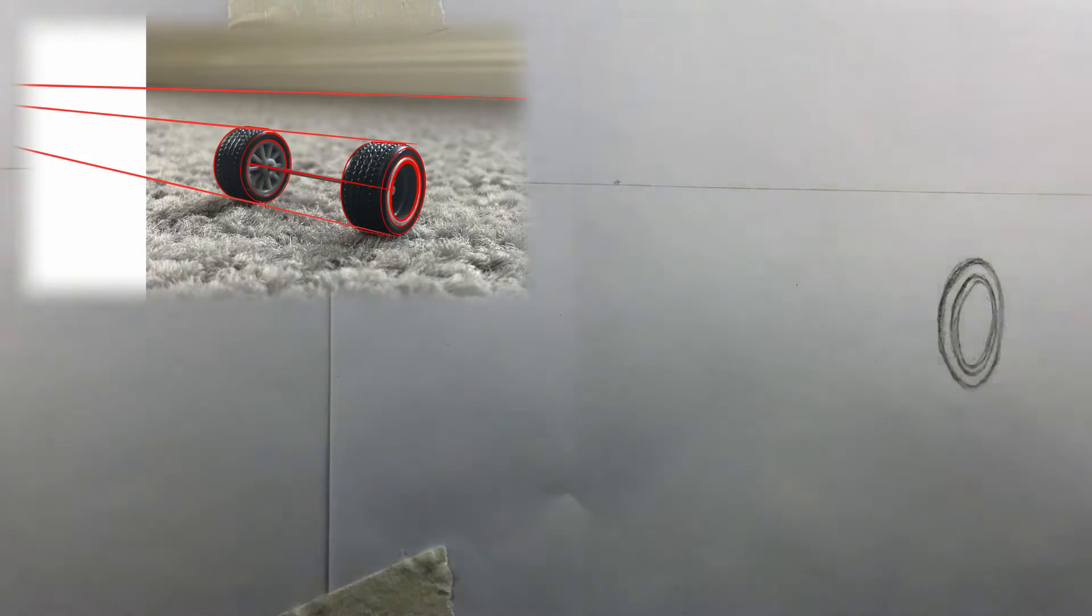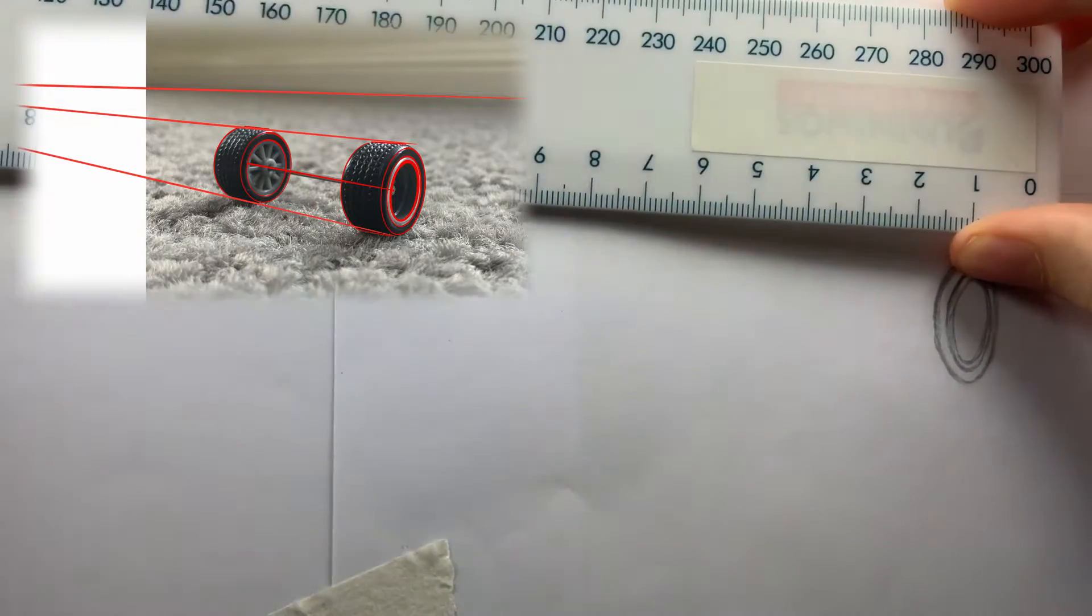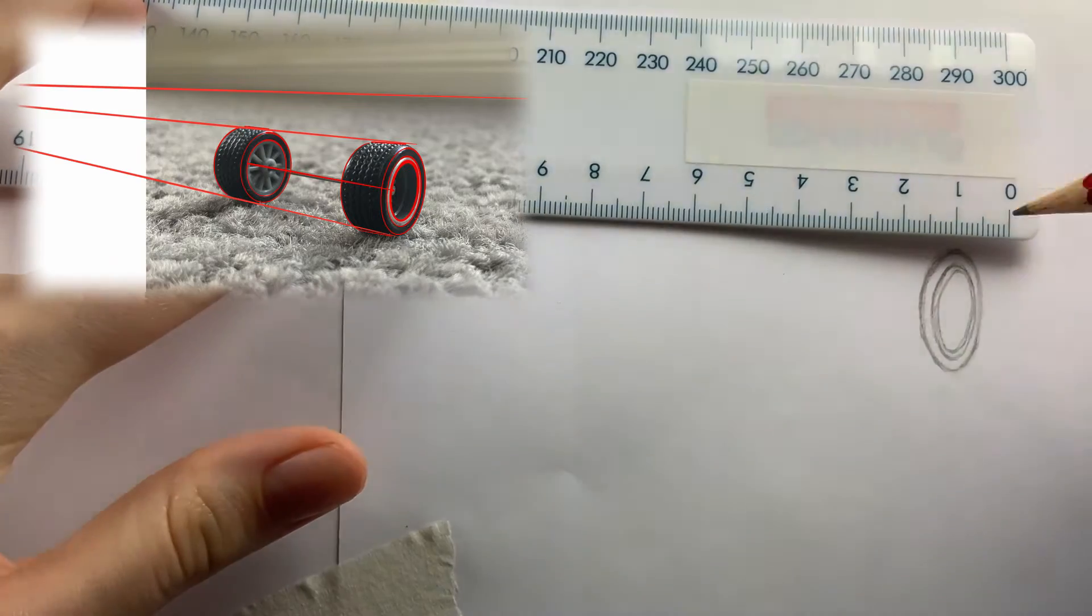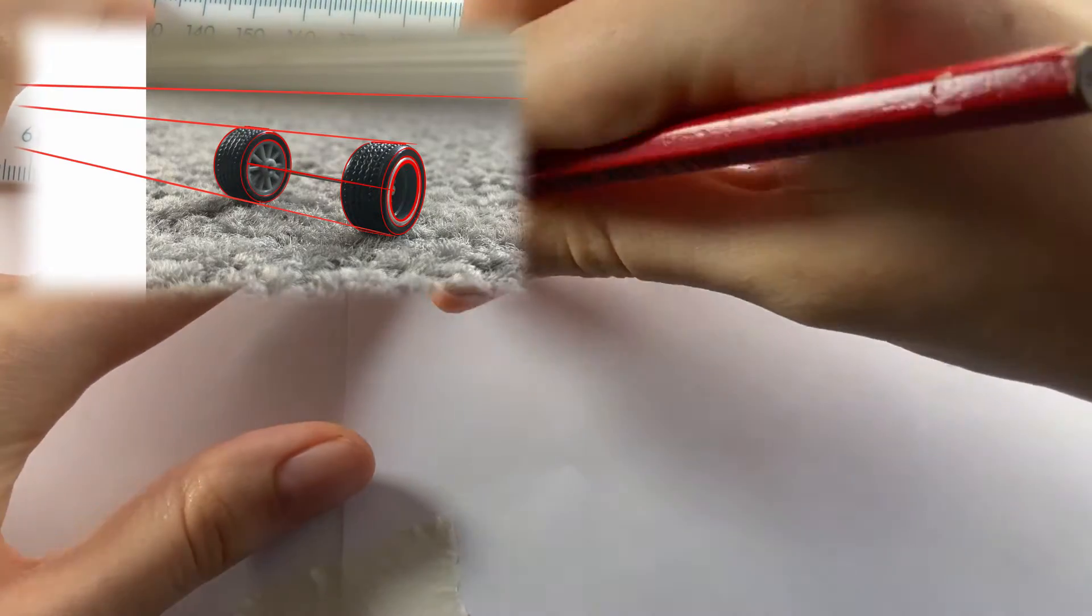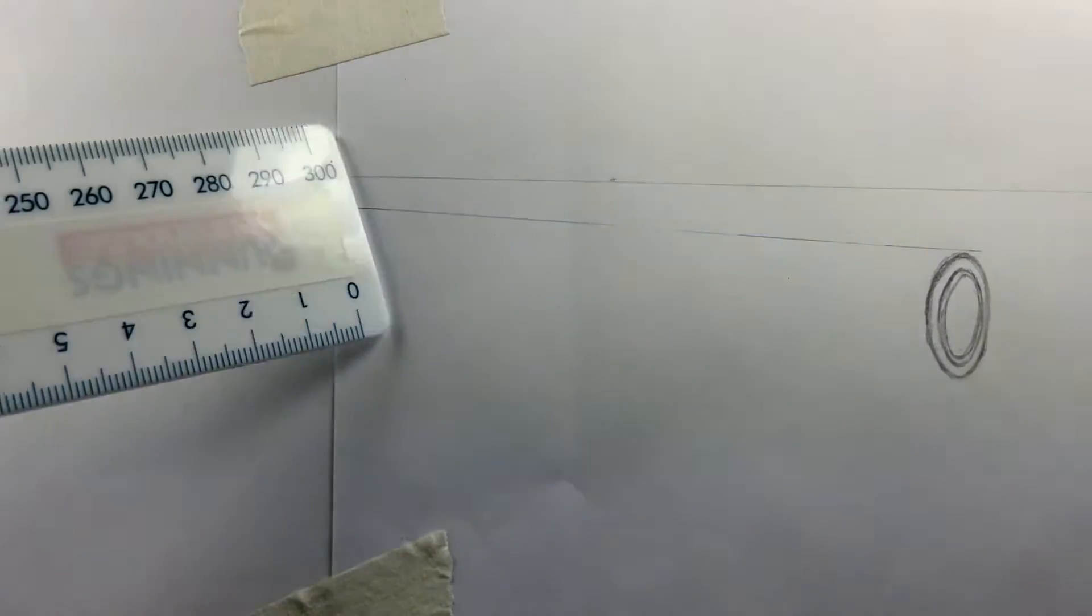Rule a line from just above the tyre's ellipses to the vanishing point. It doesn't need to go all the way to the vanishing point, it just needs to go on the one way.